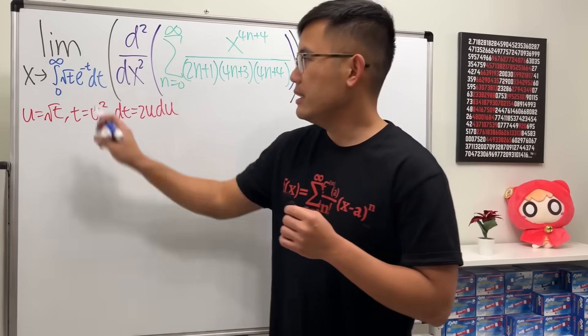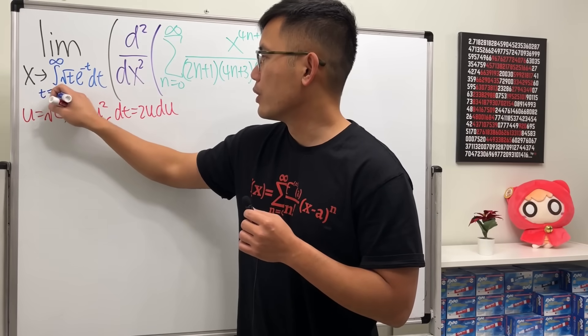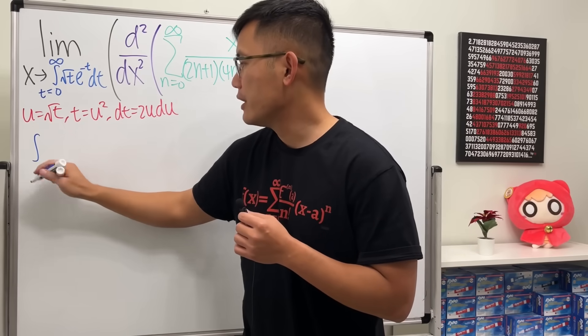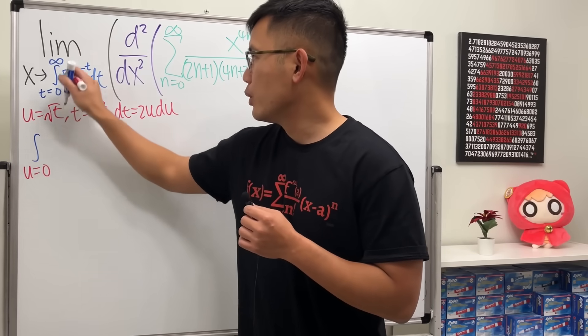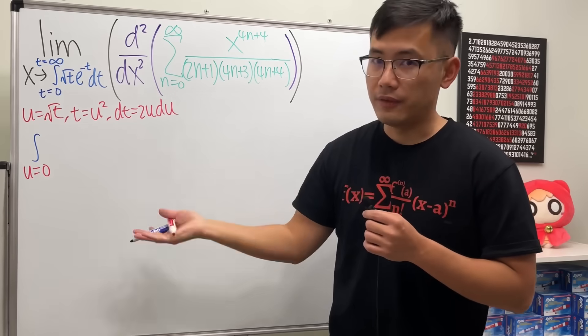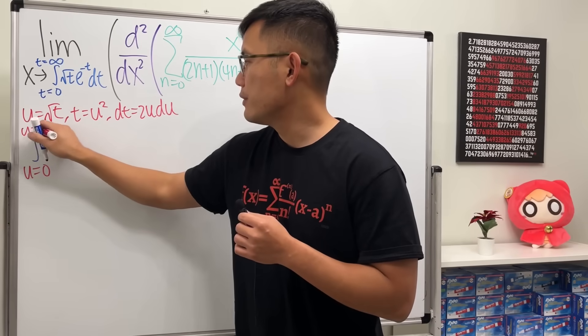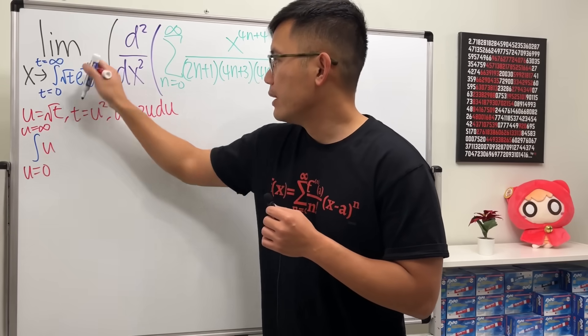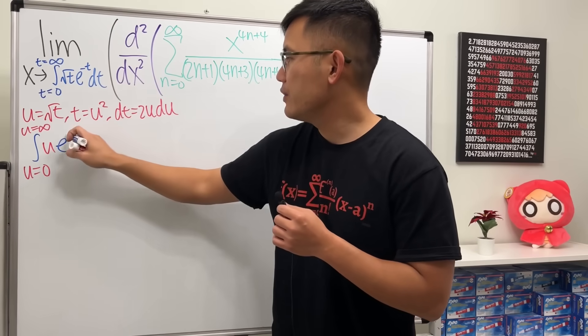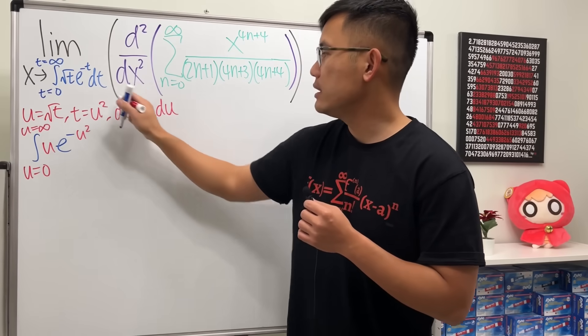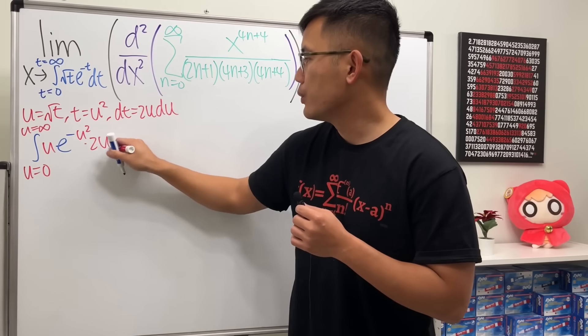And now we can take this integral from the t world to the u world. When t is equal to 0, that means u will be starting at 0. And then when we put infinity to the square root of t, we get infinity. So u will be infinity right here. Square root of t is our u, and then we have e to the negative t is u squared. And the last part is dt, which is 2u du.